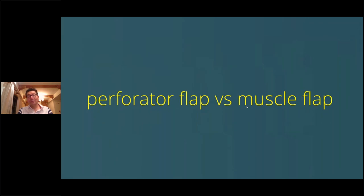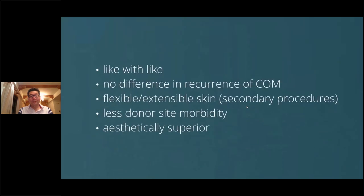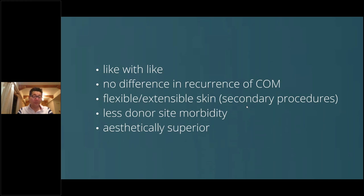When you look at these kinds of defects, the first question that comes to a lot of people's minds is whether or not to use a perforator flap versus a muscle flap. For me, I don't mind which flap you use, but I like to use like with like. We know through papers that there's no difference in recurrence of chronic osteomyelitis as long as you keep the good principle of debridement and obliterate the dead space. Muscle gives you great flexibility and obliterates the defect very well, and gives you nice skin coverage.